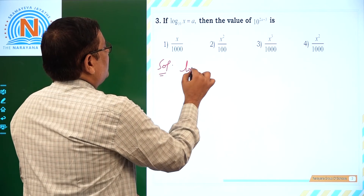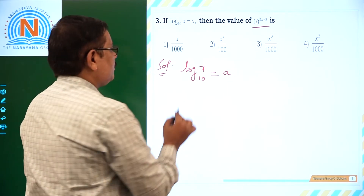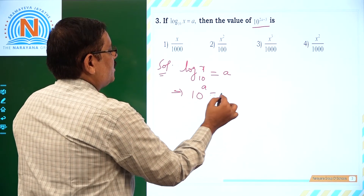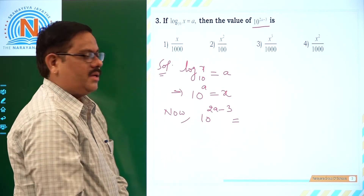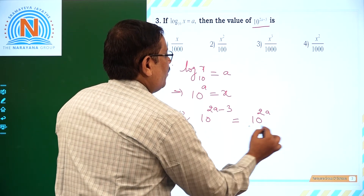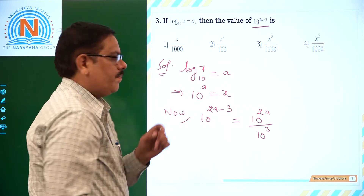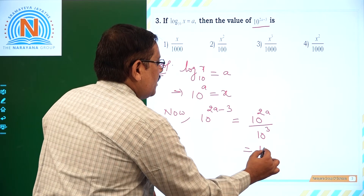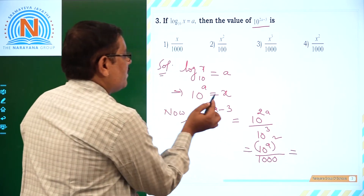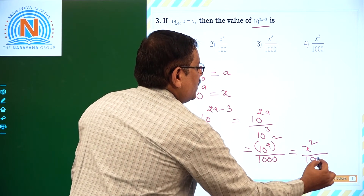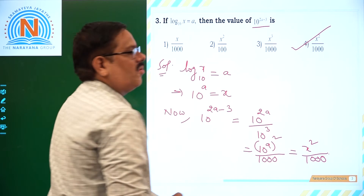Next question: if log x to the base 10 is equal to a, then what is the value of 10 to the power 2a minus 3? As per the definition, 10 to the power a equals x. Now, 10 to the power of 2a minus 3 is 10 to the power 2a divided by 10 to the power 3. Since 10 power a is x, 10 power 2a is x squared, and 10 power 3 is 1000. So the answer is x squared by 1000, which is the fourth option.